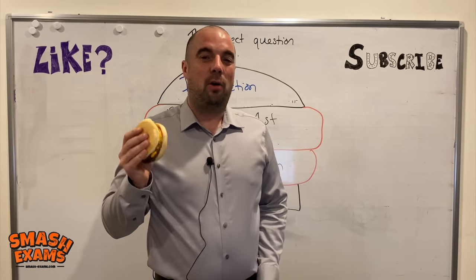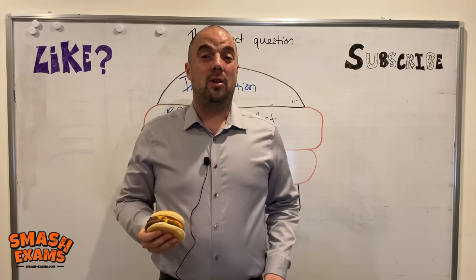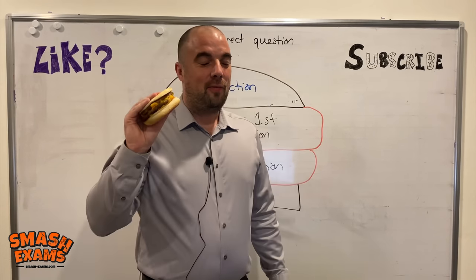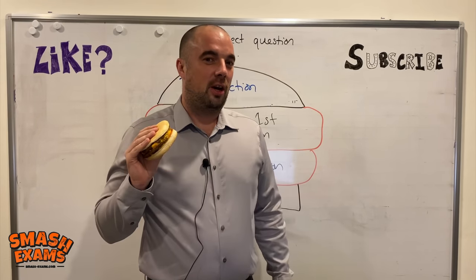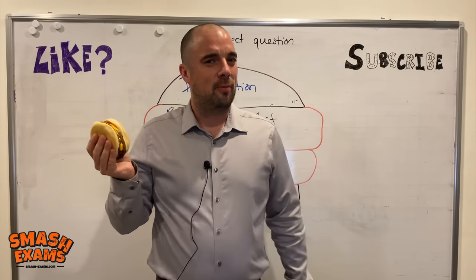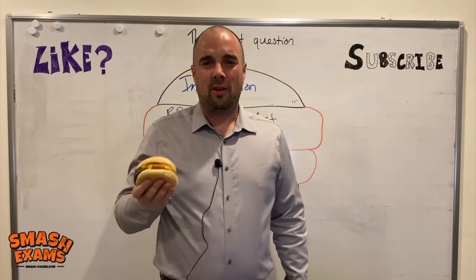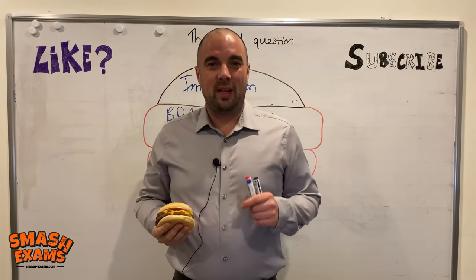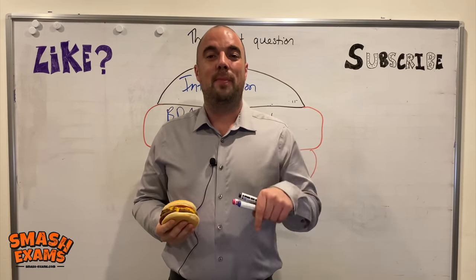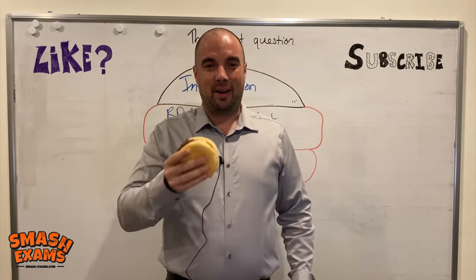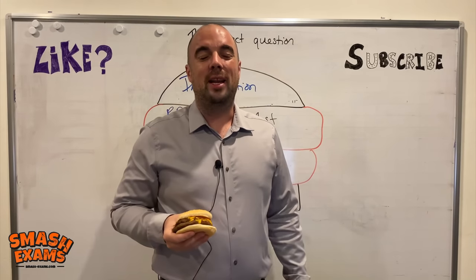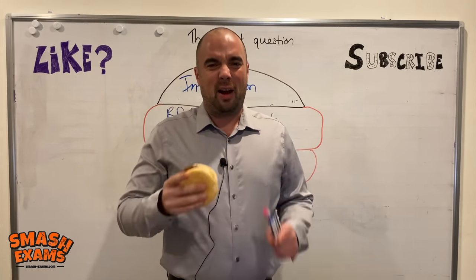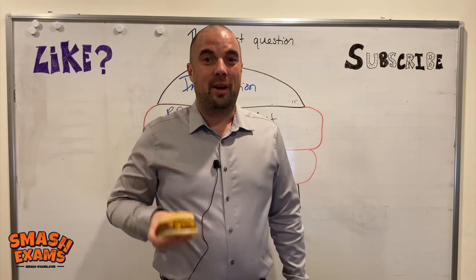There you have it — that is how the humble burger can help you get a band 7 in IELTS Writing Task 2. If you've watched this whole video and are asking where's the cheese in the double burger — that is for another video. If you're interested, type 'where's the cheese' in the comments and I'll give you a shout out in the video where I explain that metaphor. Hint: it involves linking words.